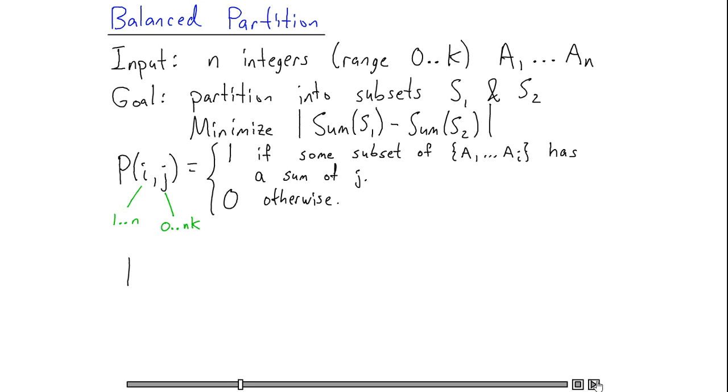My recursive formula for p of ij is going to be very easy. p of ij is going to be equal to 1 if p of i minus 1 j is equal to 1, because in this case I know I have a subset of the first i minus 1 elements that sums to j.